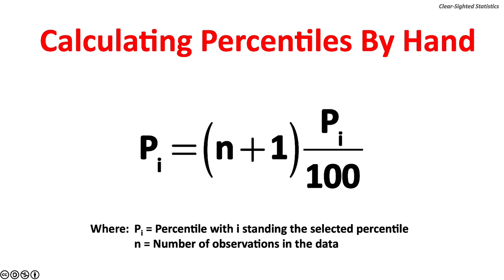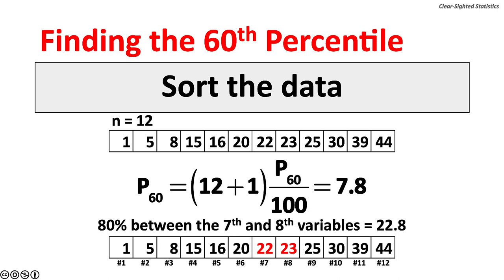The formula for calculating percentiles by hand: P sub i equals (n plus 1) times (P sub i over 100). For example, finding the 60th percentile with n = 12: P60 = (12 + 1) × (60/100) = 7.8. The 60th percentile is 80% between the 7th variable (22) and the 8th variable (28), giving a result of 22.8. Excel's PERCENTILE.EXC function is much faster — it requires no sorting and can handle large datasets, with two arguments: the cell range and the desired percentile.